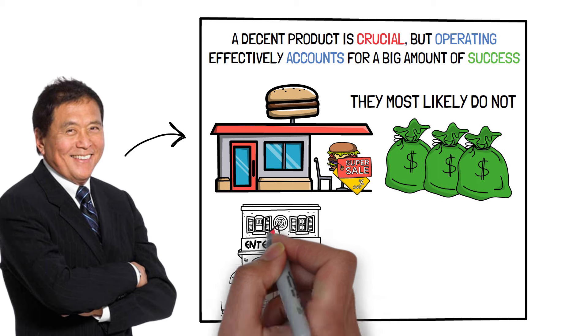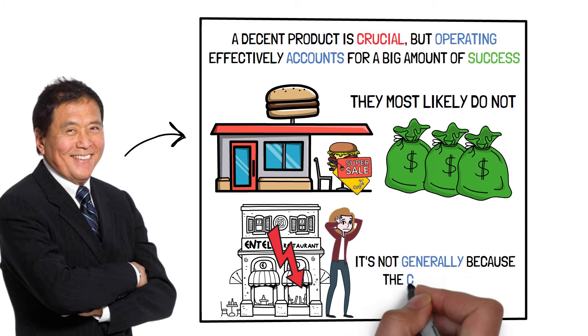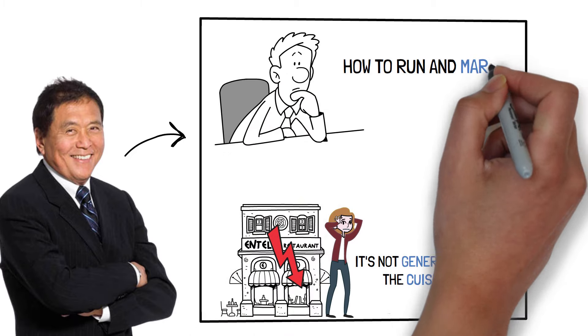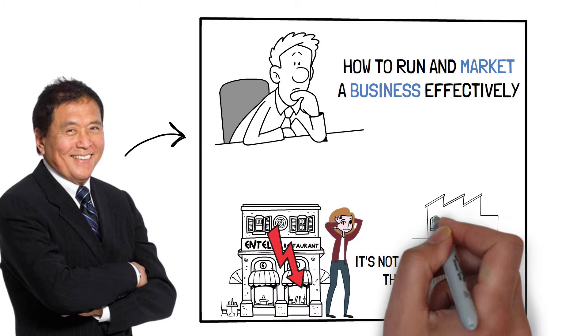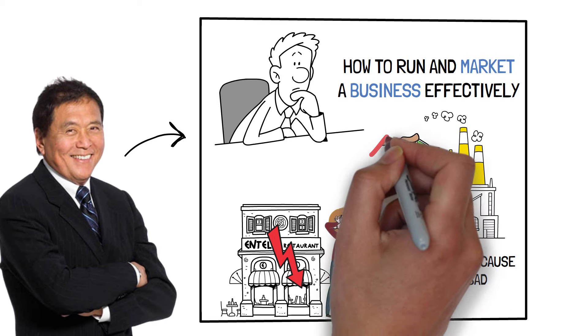Independent restaurants fail at an alarmingly high rate, but it's not generally because the cuisine is bad. It's usually because the proprietors don't know how to run and market a business effectively.